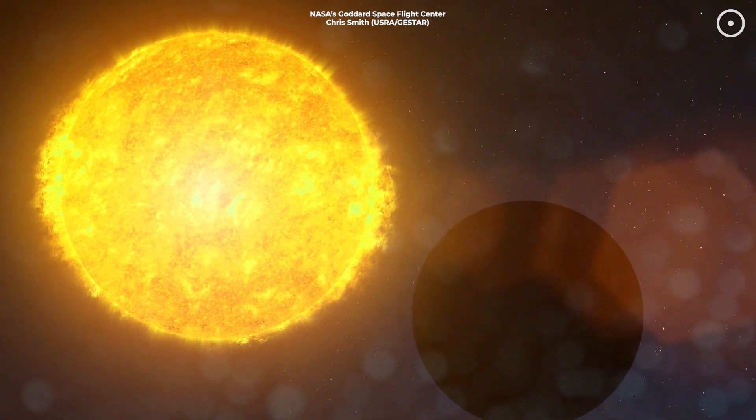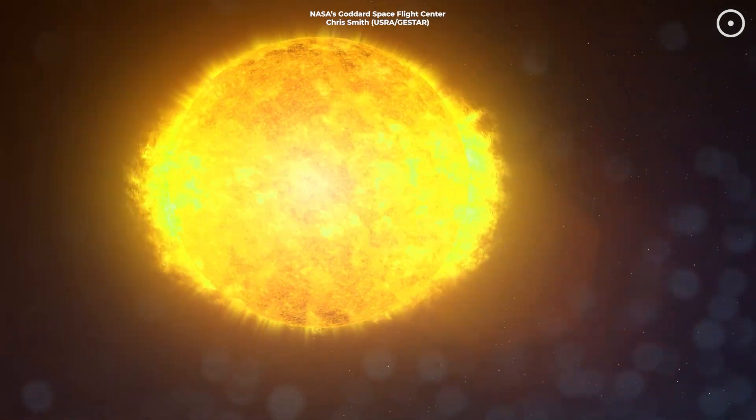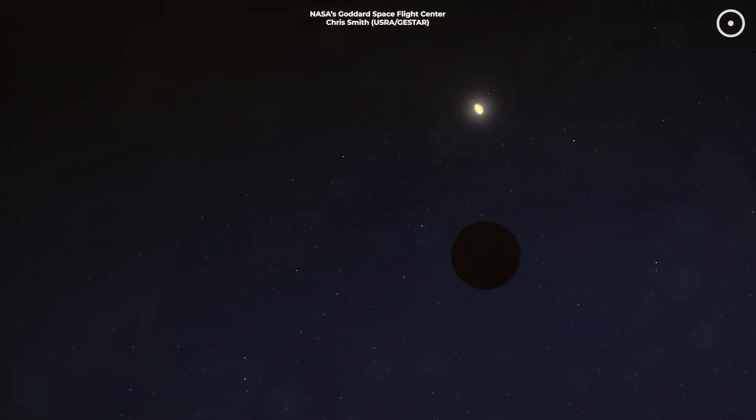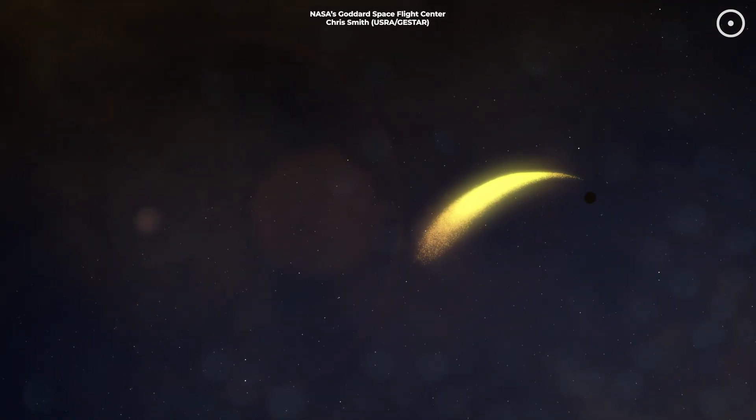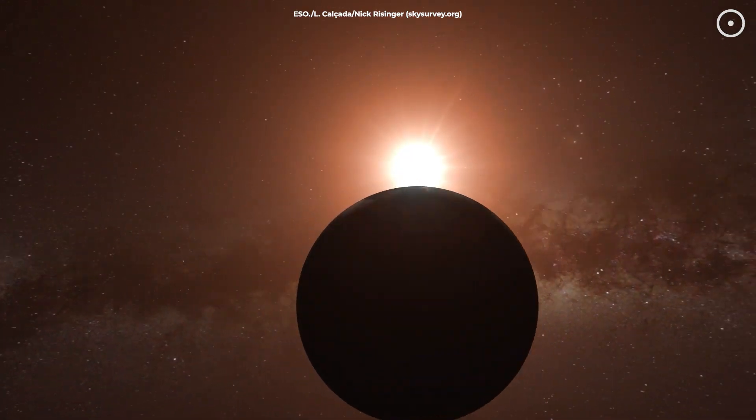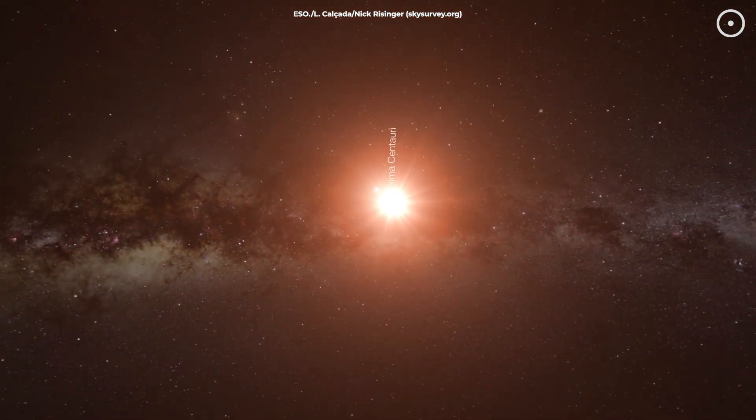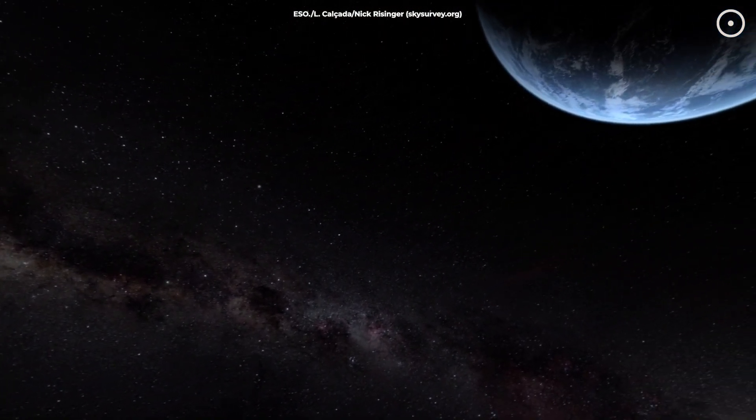But this explosion isn't only incredibly luminous, but also vast in scale. Imagine an explosion so powerful that it could stretch across light-years of space. A light-year is the distance that light travels in one year, which is about 5.88 trillion miles. If AT-2021-LWX were as close to us as Proxima Centauri, which is about 4.24 light-years away, it would outshine the full moon by far.